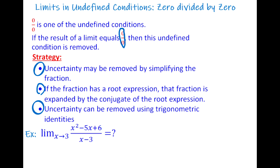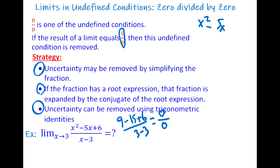Our first example: when x goes to 3, find the limit of (x² - 5x + 6) divided by (x - 3). If you put 3 in for x, the numerator gives 9 - 15 + 6 = 0 and the denominator gives 0, so we have 0 divided by 0. For polynomial functions like this, the first thing that comes to mind is to factor the numerator.